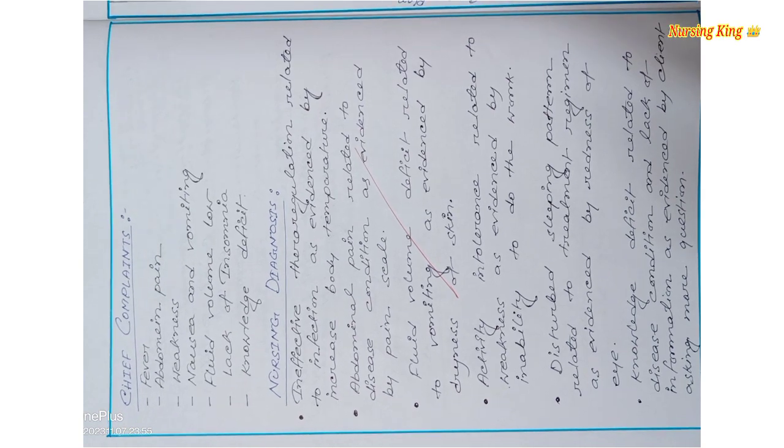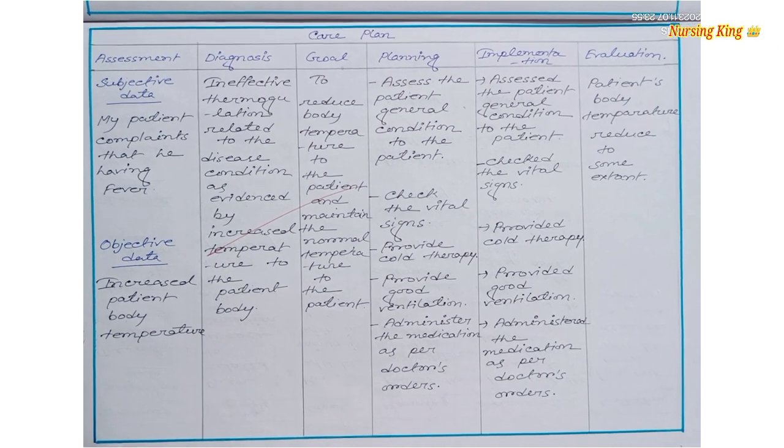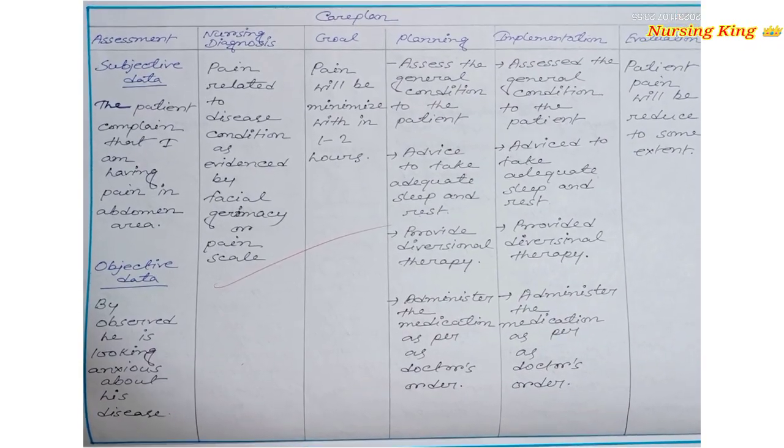After that, you have to mention the chief complaint and nursing diagnosis. So according to the disease condition, you have to mention the chief complaint, nursing diagnosis, and for each nursing diagnosis, you have to mention one nursing care plan.